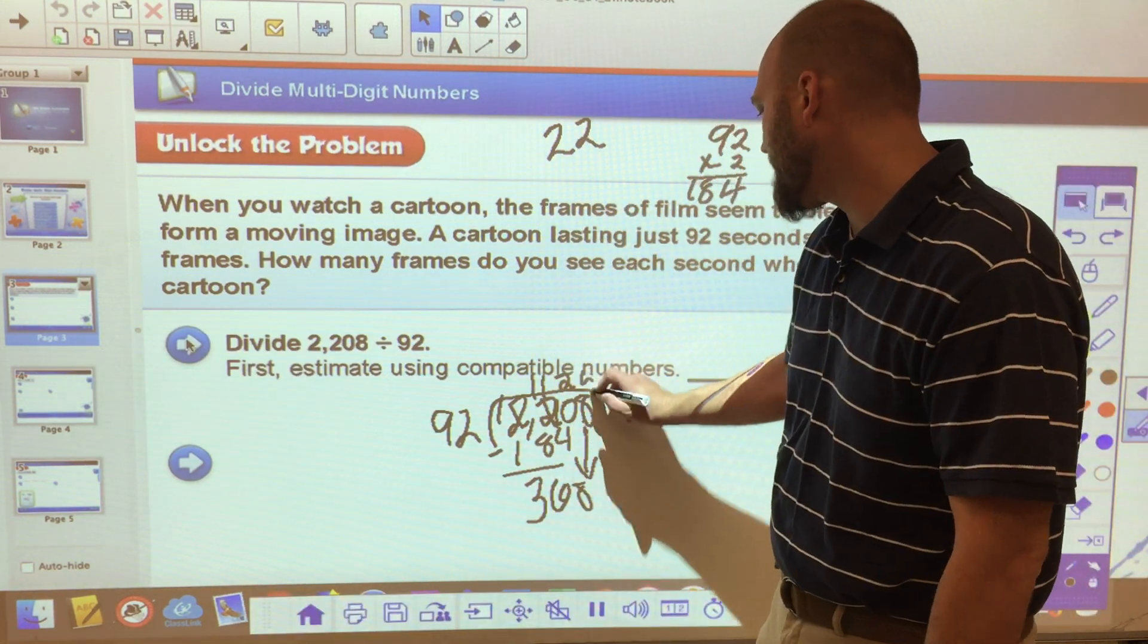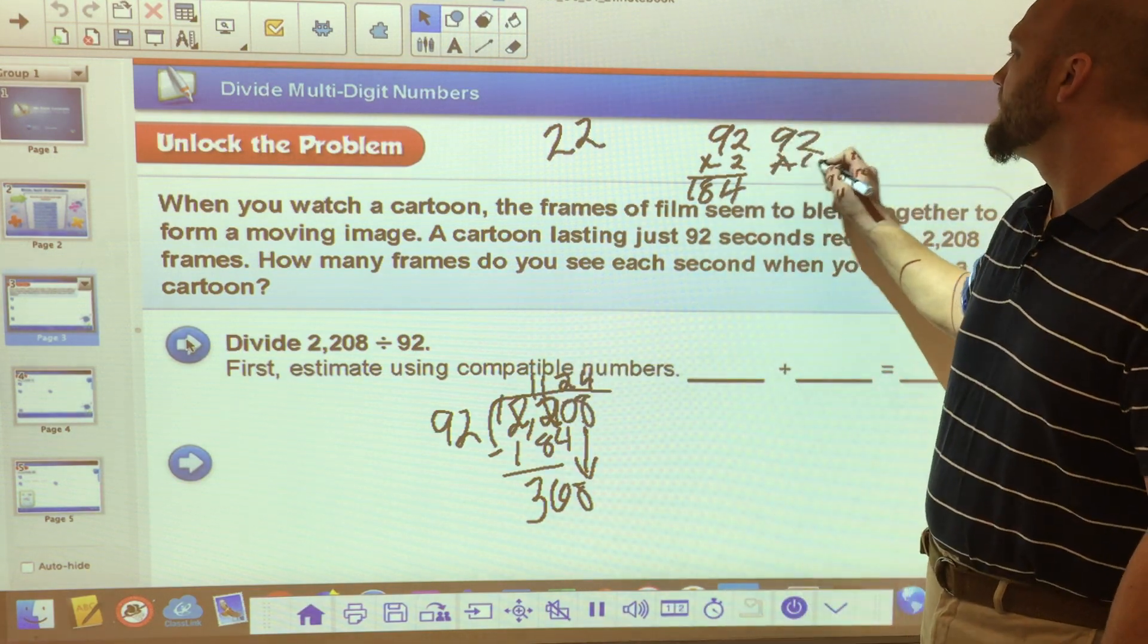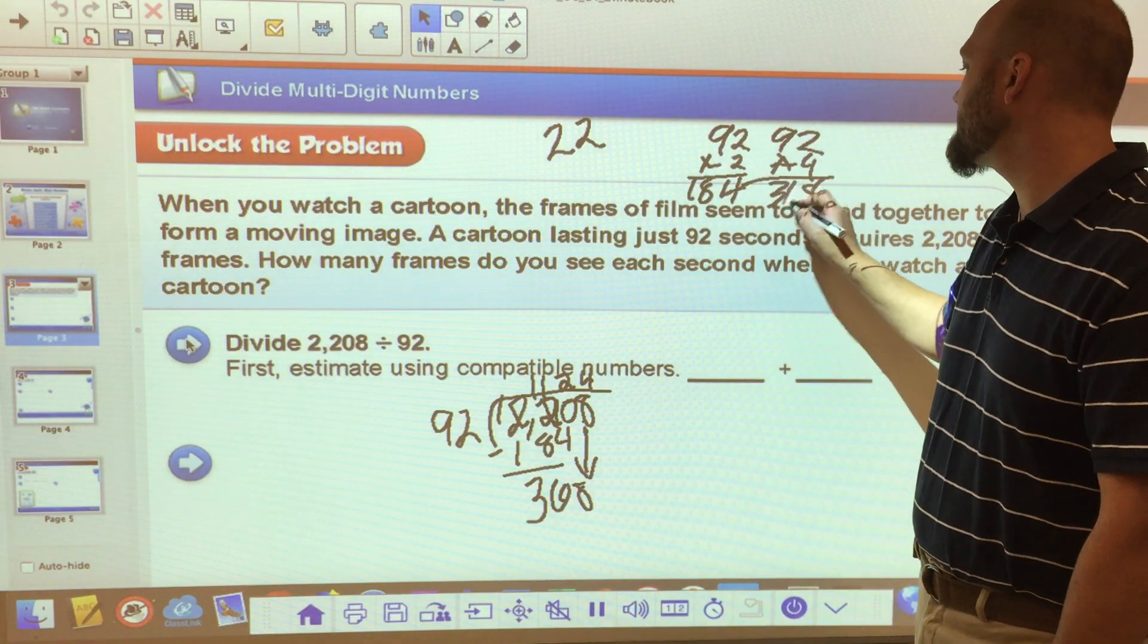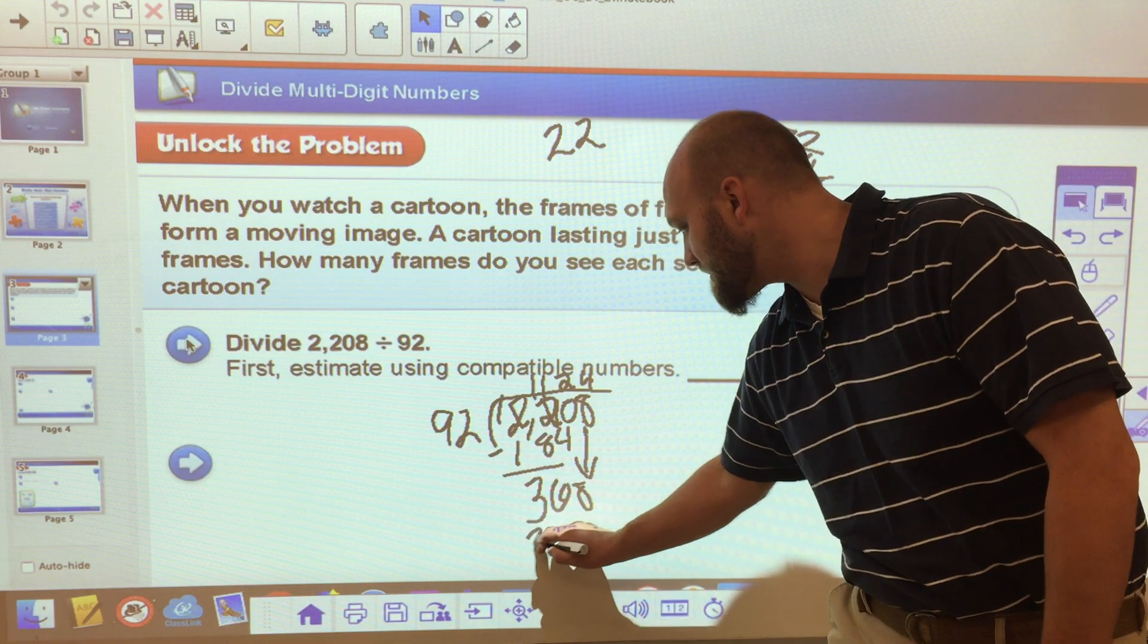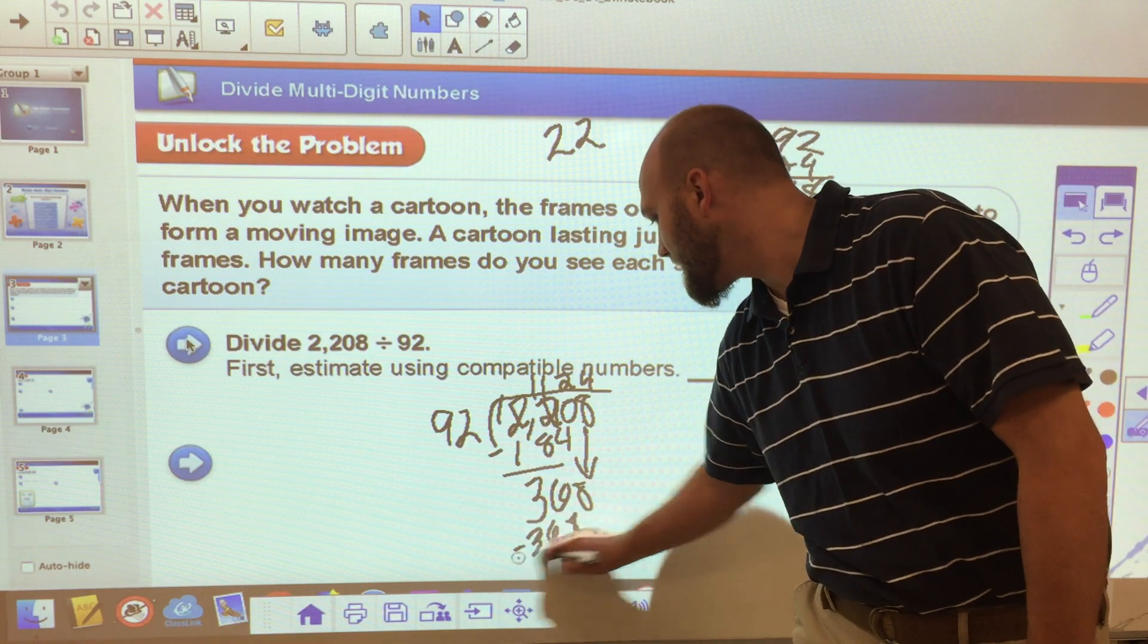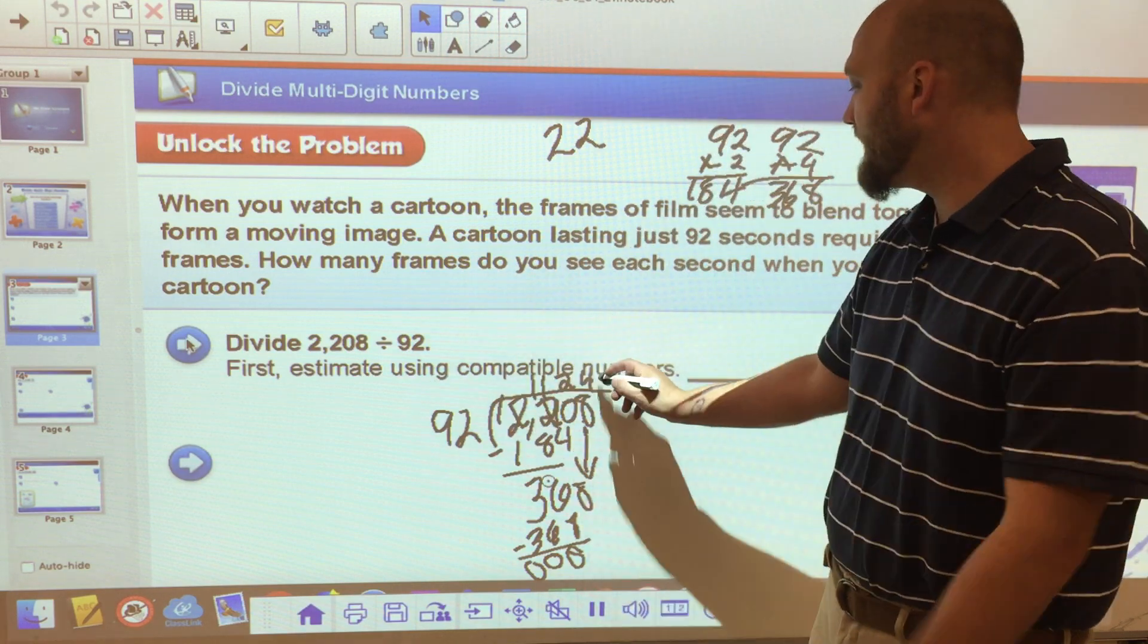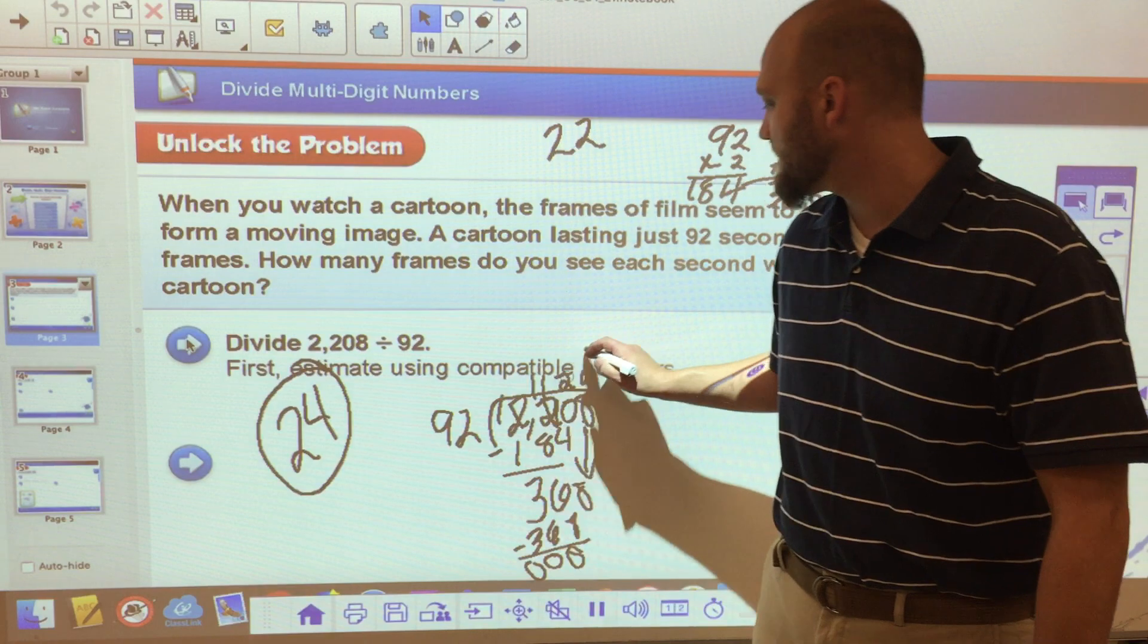So I come up here and I get 4. Let's check our work. We have 92 times 4. 4 times 2 is 8. 4 times 9 is 36. 368. And I found it. Come down here and I'm going to write it just to show myself that I'm done completely. What I end up with is the number 24 as my answer. I have it right up here.